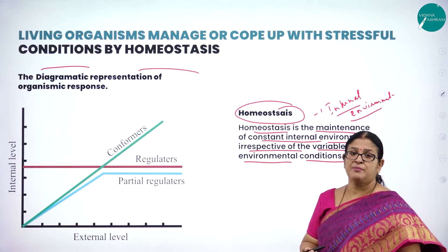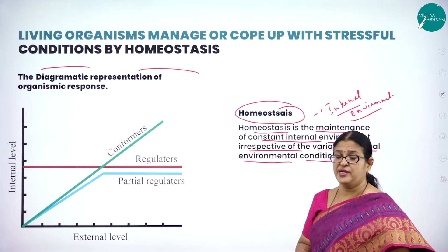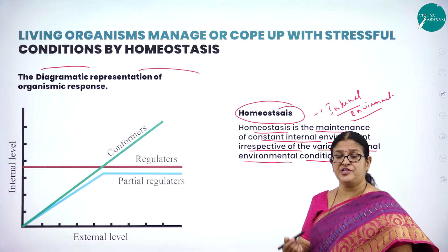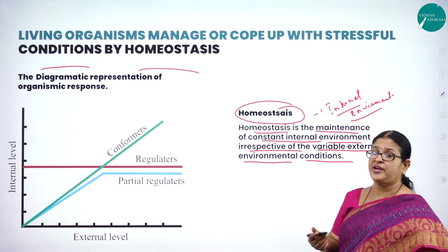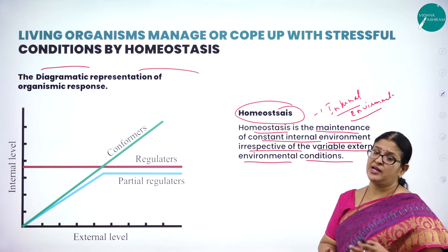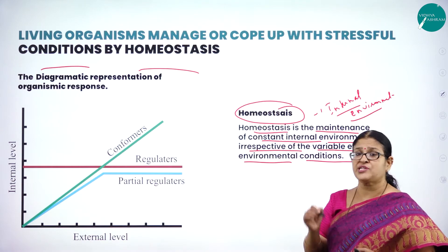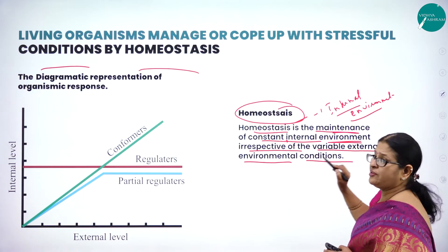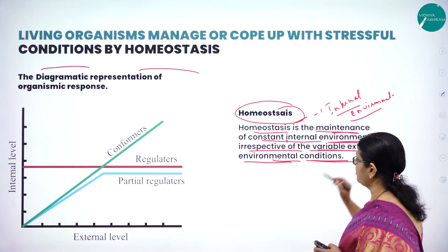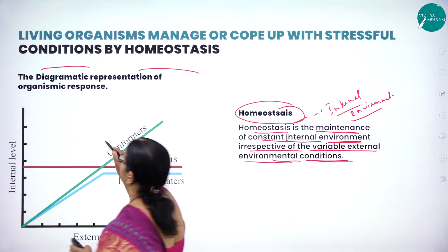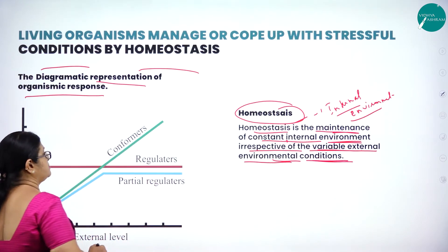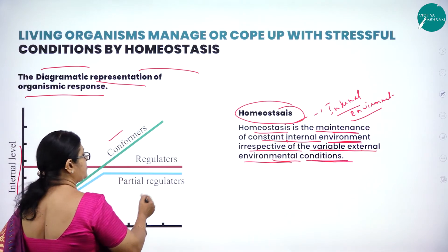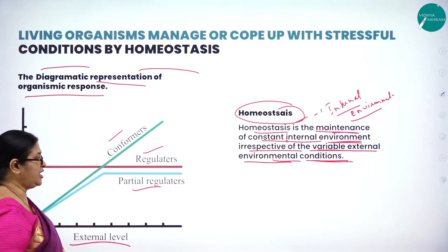For example, take mammals — our body temperature is constant and does not keep changing according to the external environment. In contrast, amphibians, fishes, and reptiles have body temperatures that keep changing according to external environmental conditions. Based on this, we have conformers — organisms whose body temperature is not constant and changes with the external environment — regulators, whose body temperature is constant, and partial regulators.